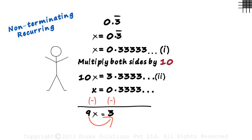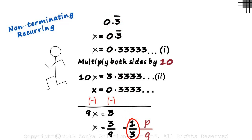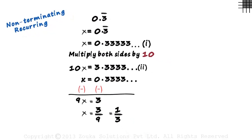Transposing 9 to the right hand side, we get x equal to 3 by 9, which equals 1 by 3. Here we converted our recurring decimal to the rational number form P by Q. Remember, our ultimate aim is to eliminate the recurring decimal.